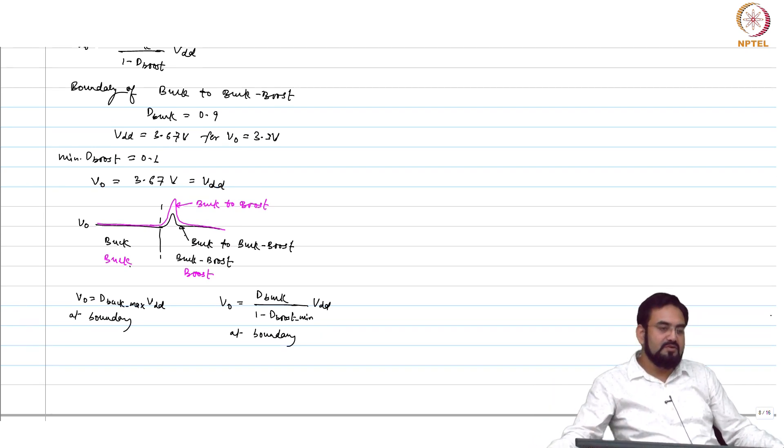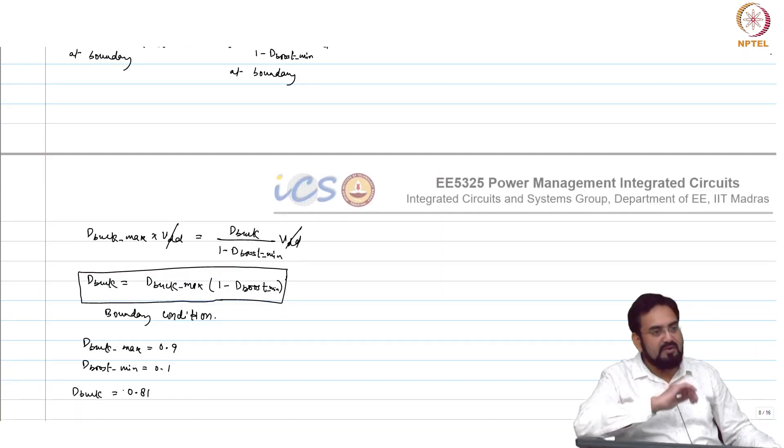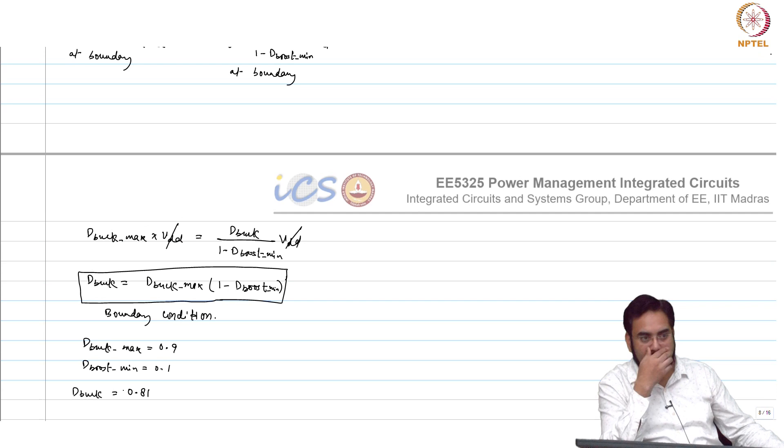Now, after that what do you need to do? Now, let us say further my VDD is further reducing I want to increase the duty cycle. Which duty cycle you will you have to increase d_boost or debug? You can achieve a higher voltage by increasing both whether you increase debug or increase d_boost, your output will you can achieve basically the same output for lower voltage lower VDD. Which one which makes more sense to increase is debug or d_boost? Why?